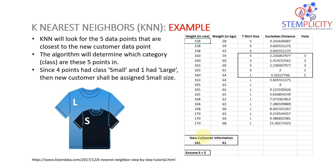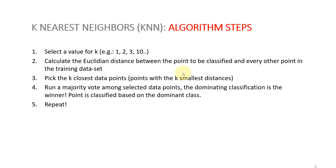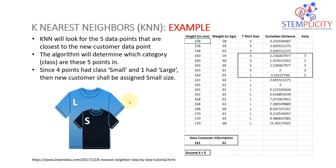To summarize: we bring in a new data point, calculate the Euclidean distance to all existing points, pick the five shortest, and see which class most of them belong to. If more points belong to the small class, the new point is classified as small; if large has more, it's large. That's K-Nearest Neighbors in a nutshell: select K, calculate distances, pick K closest, majority vote, dominant class wins.